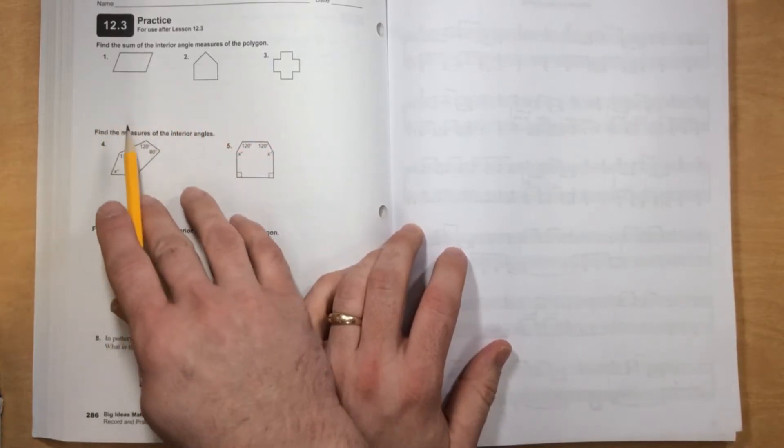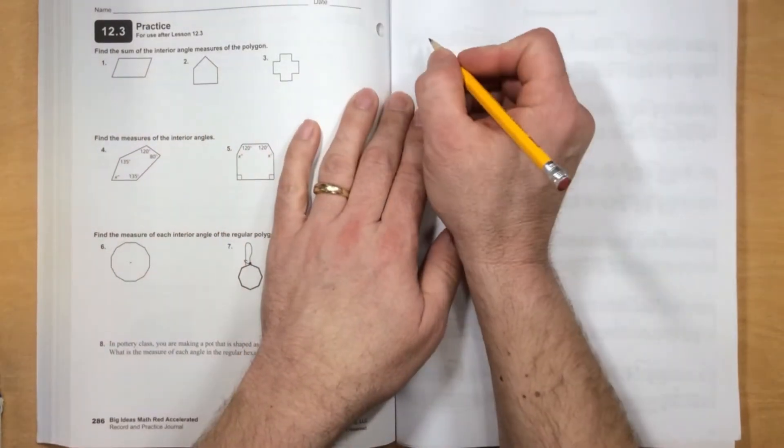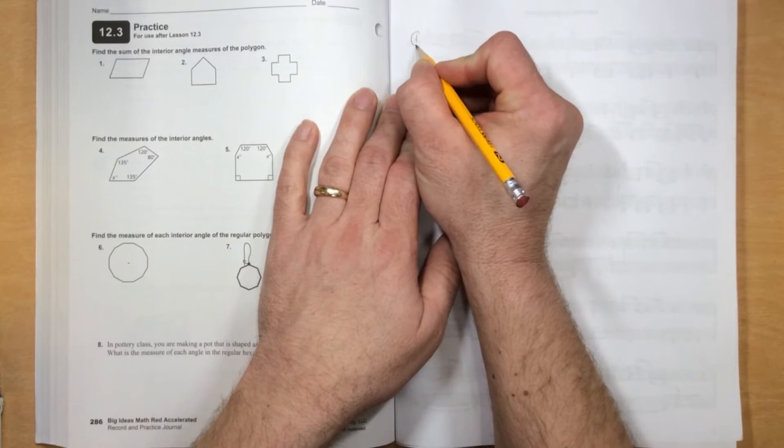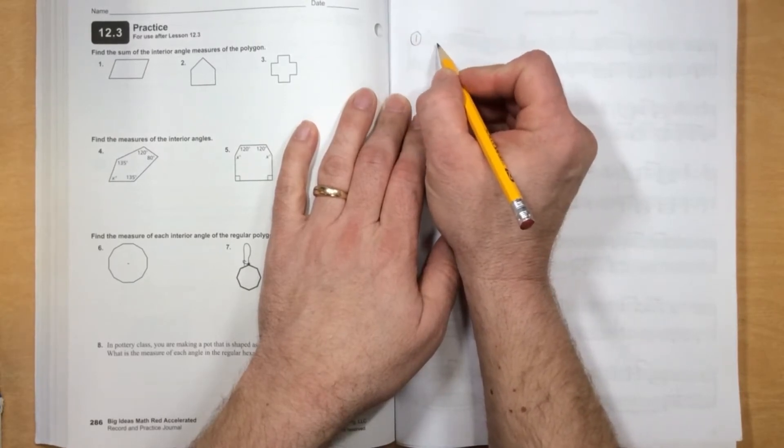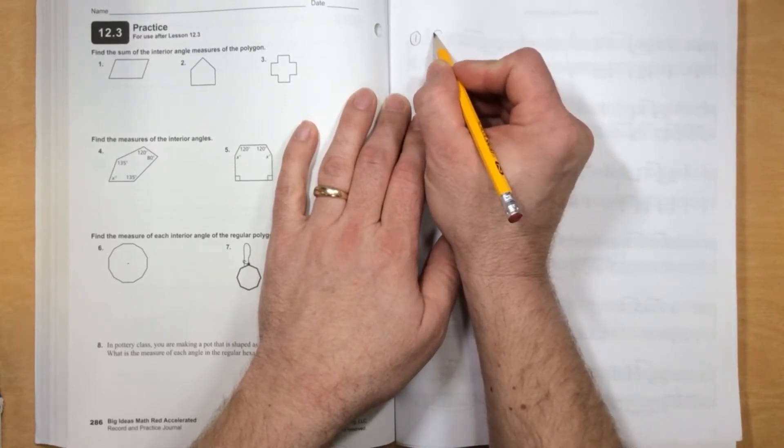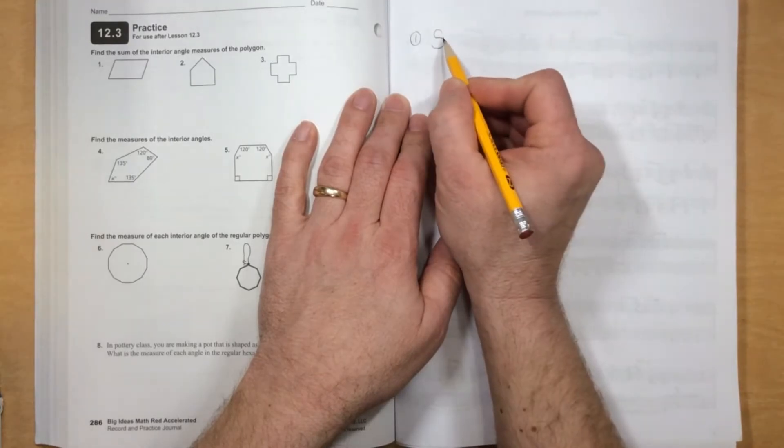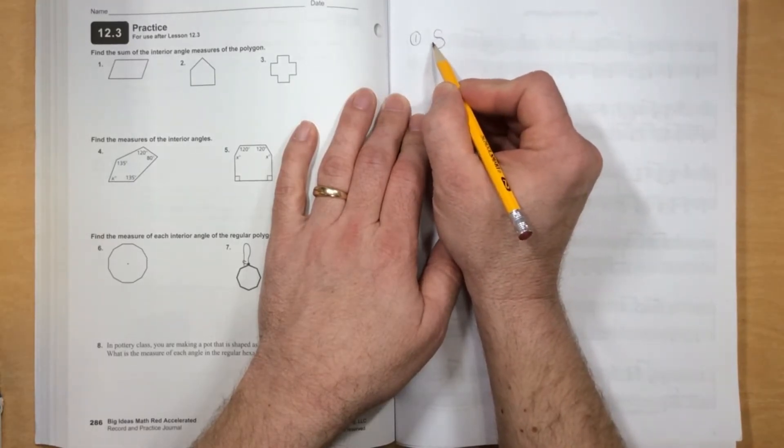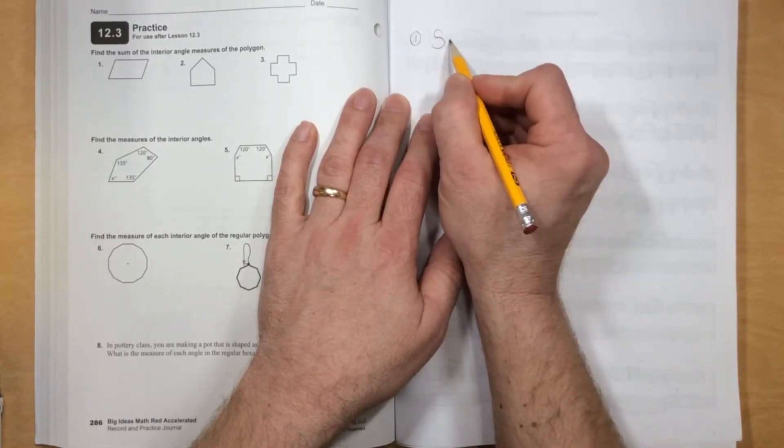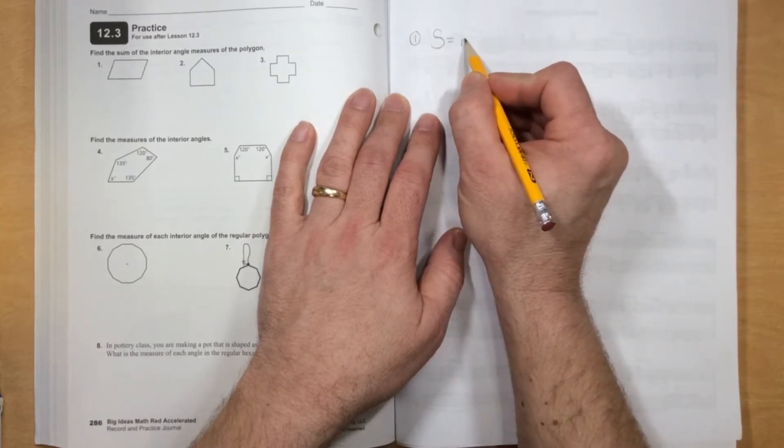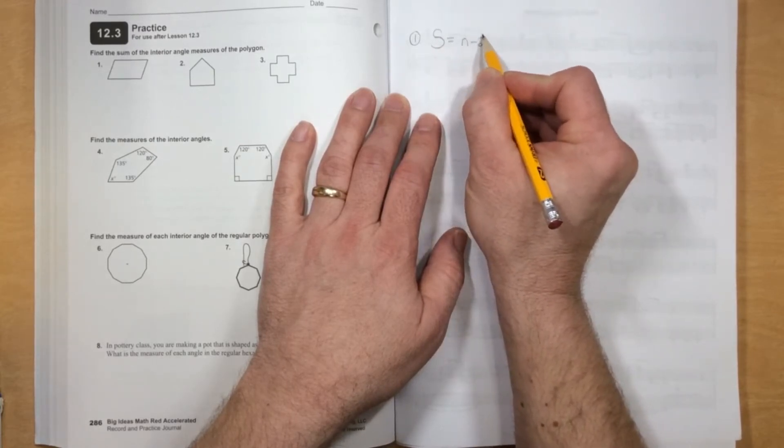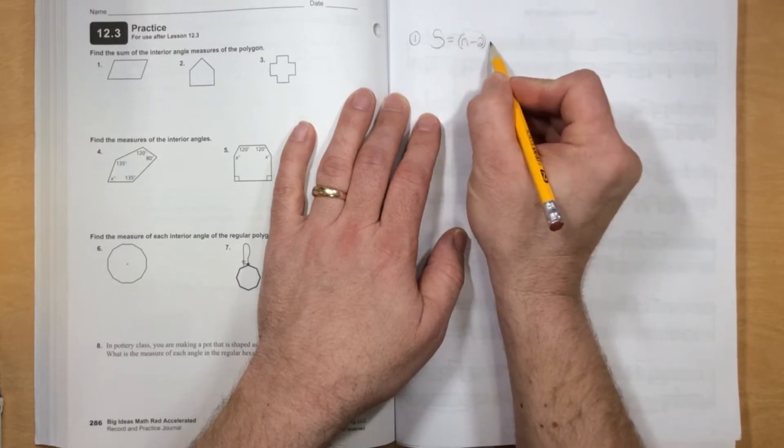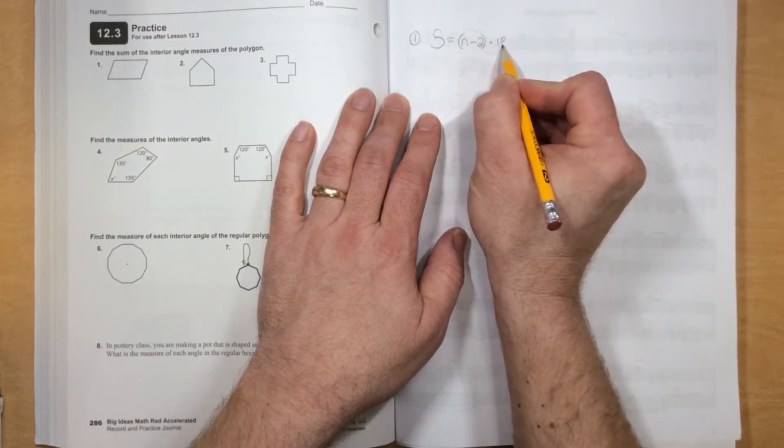Well, we know all quadrilaterals are 360 degrees, but let's show how we know. So remember that the big S, that's the sum of the interior angles, the S is for sum, equals the number of sides minus 2 times 180.